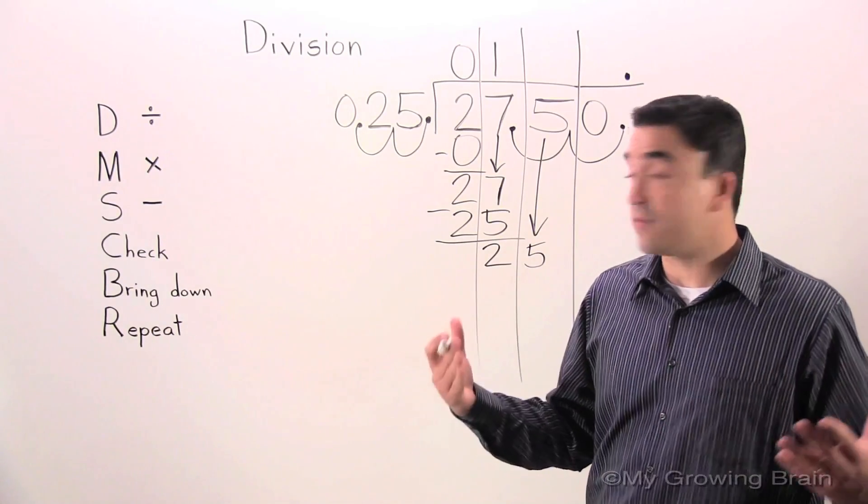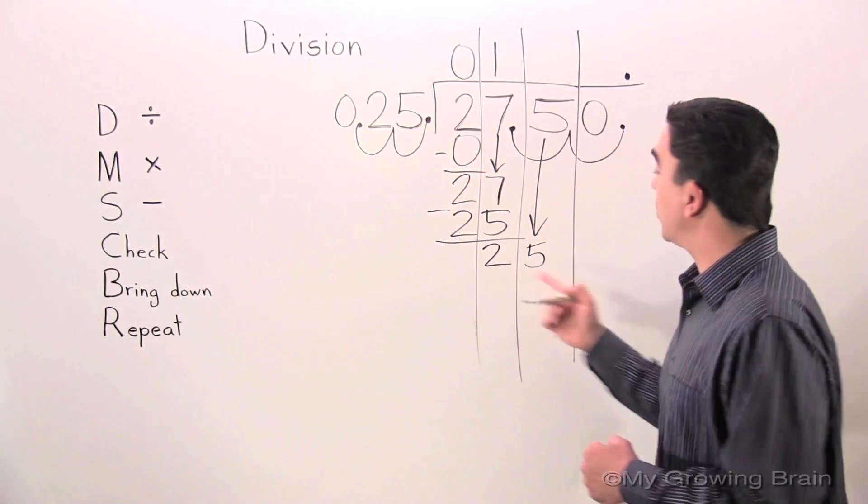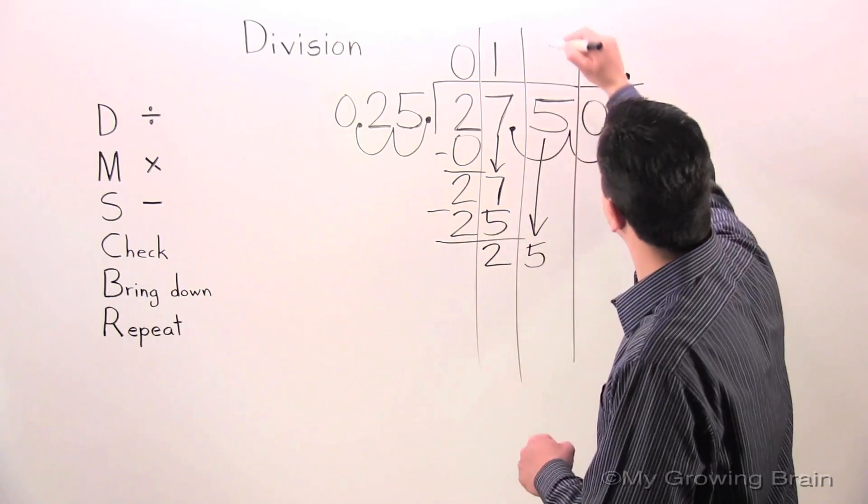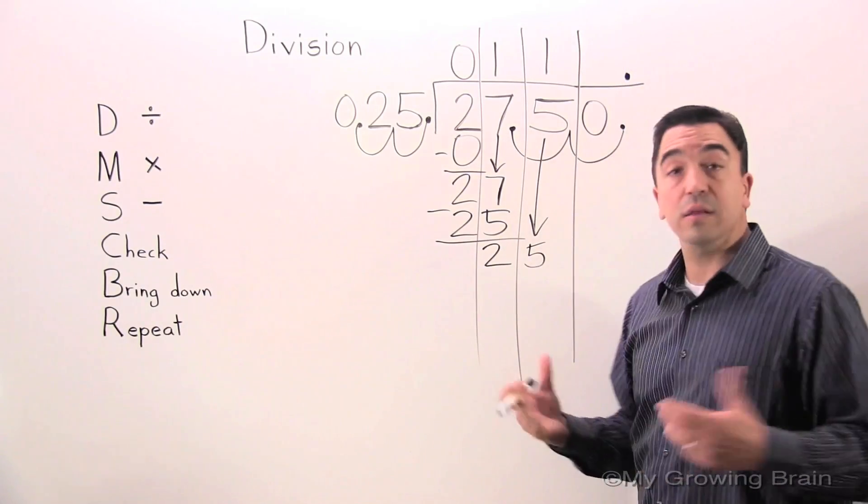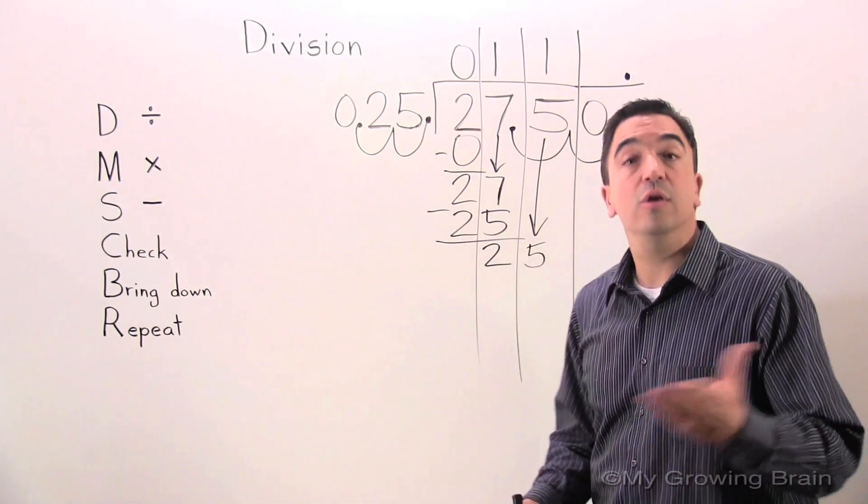Alright. Next step. Repeat. Repeat the whole process. Back to the top. Divide. 25 divided by 25. One. Next step. Multiply. 25 times 1 equals 25.